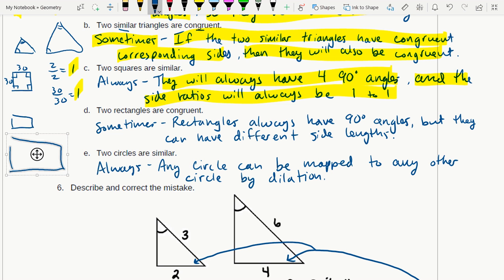It's a sometimes. It is true that they always have 90-degree angles, but they certainly can have different side lengths. They don't have to have the same side lengths, they don't have to be congruent, so that's a sometimes.